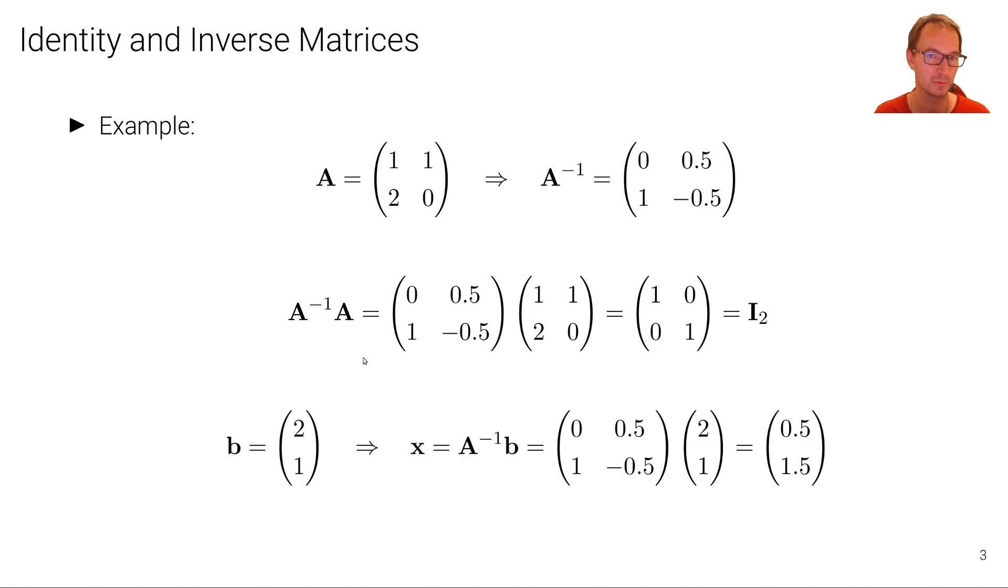And now if I want to solve this linear system, what I can do? Now I have already computed the matrix inverse. I just need to multiply the vector b. Let's take an arbitrary vector b. Let's say 2 and 1 and multiply that with the matrix inverse. And I get the solution x, in this case 0.5 and 1.5.